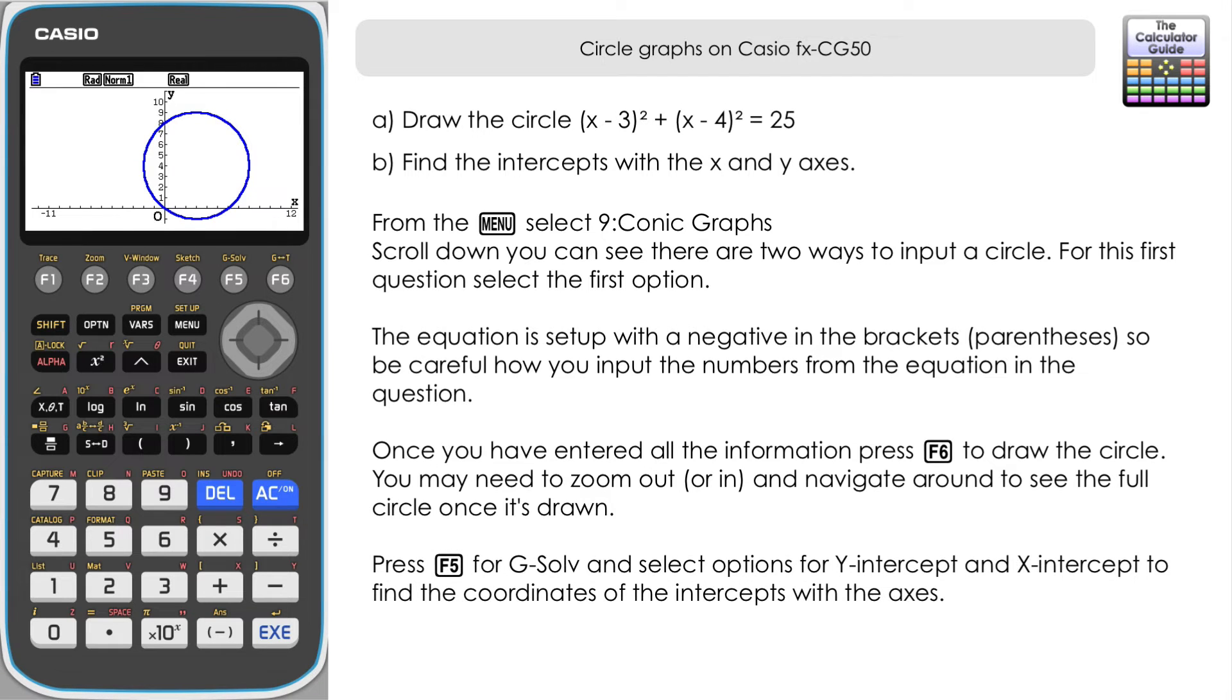You can see the intercepts here displayed on the graph but if we want to zoom in and get those values, if we perhaps couldn't tell straight away just from looking at the graph what they were, we can go to F5 G solve and let's do the y intercept first so that's F4. You can see that we've got an intercept at 0, 0. So 0 on the x, 0 on the y. And press right and then we've got a second one here that's at 0, 8, slightly obscured there behind the circle. We've got the intercept with the y-axis there at 0, 8.